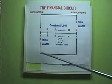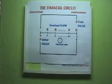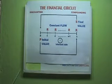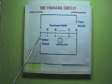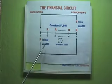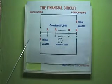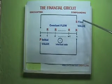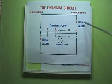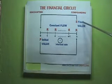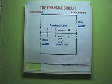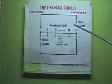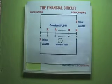Compounding — Future. Discounting — Present. P: Initial Value or Present Value. S: Final Value or Future Value. R: Constant Flow or Uniform Series.